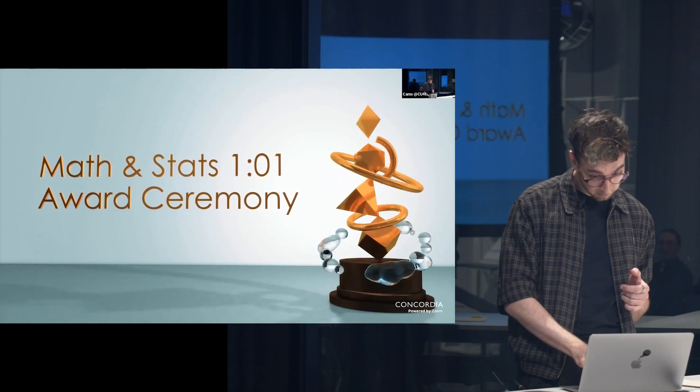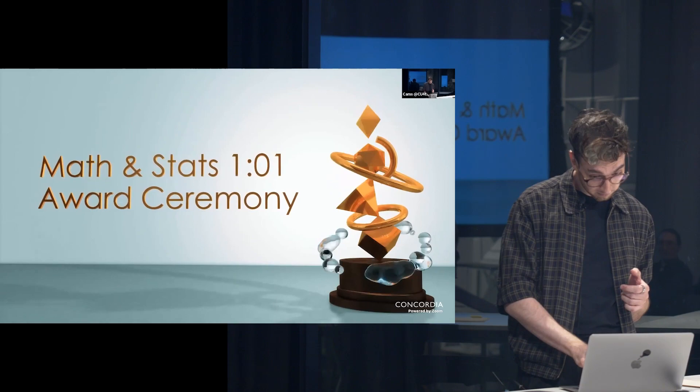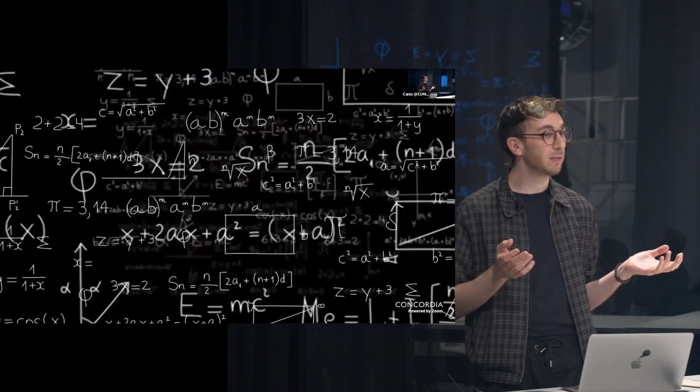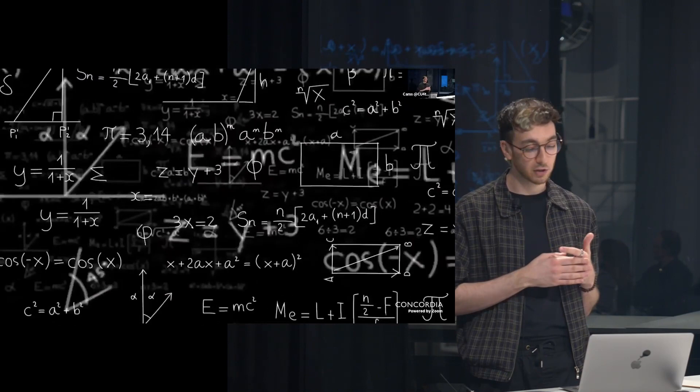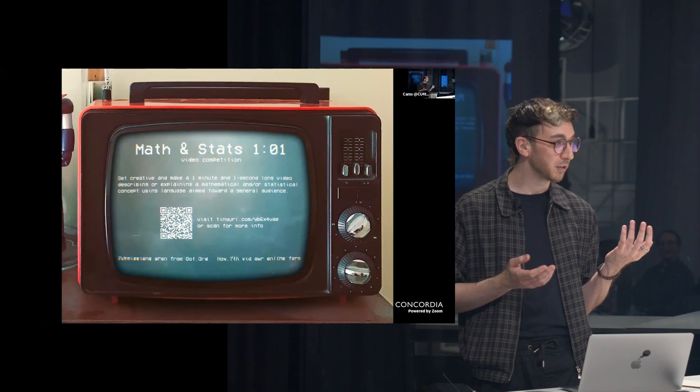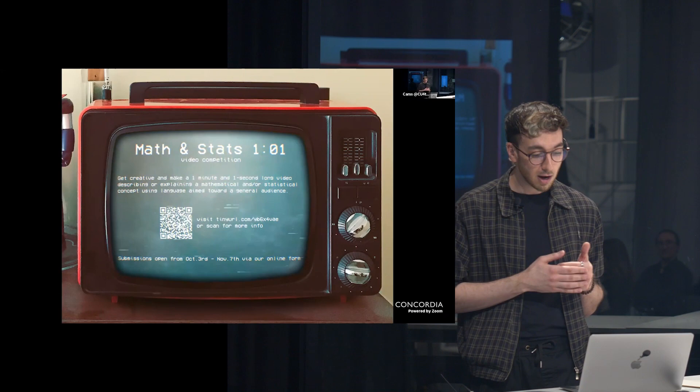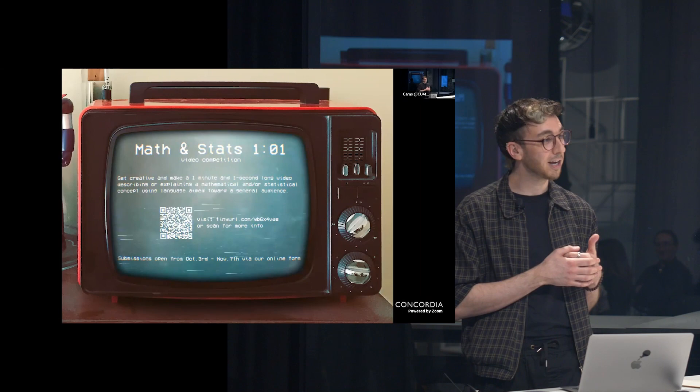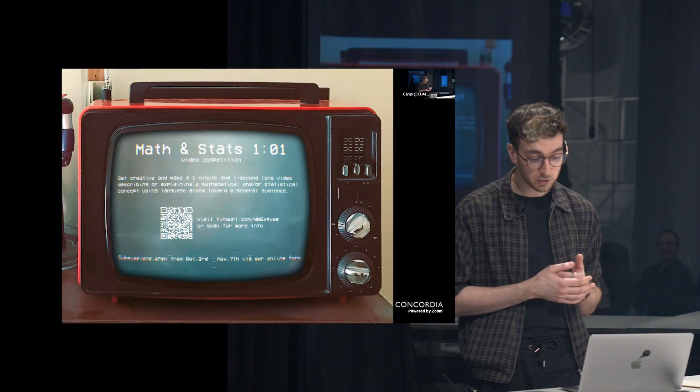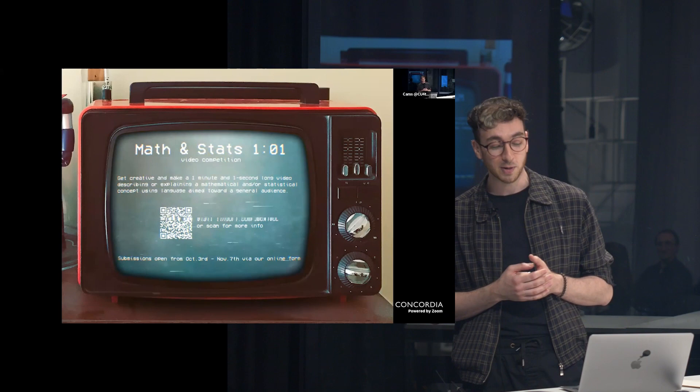In case some of you are unfamiliar with the project, I'll give you a quick overview. The competition encourages undergraduate and graduate students enrolled in a mathematics and statistics program, including a minor degree at Concordia University, to create a one minute and one second long video describing a mathematical or statistical concept in language aimed for a general audience. The competition goal was twofold: the first is for mathematics outreach and the second was to supply students with new tools for communication that can be useful in their future careers. We're really trying to spread the word of the awesome stuff we do in the department and how math can be related to our everyday lives.